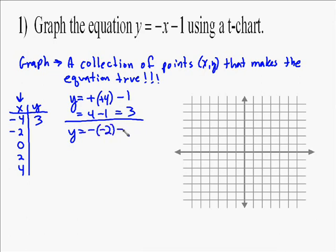Now I'm going to do the same thing with negative 2, so negative negative 2 minus 1, which equals 2 minus 1, which equals 1. So when I plugged in negative 4, I got 3. When I plugged in negative 2, I got 1. Those two values make our equation true.